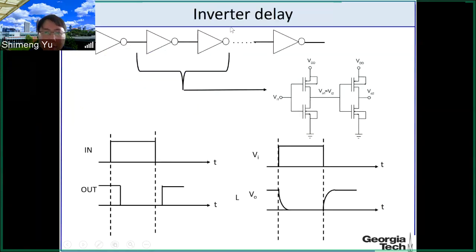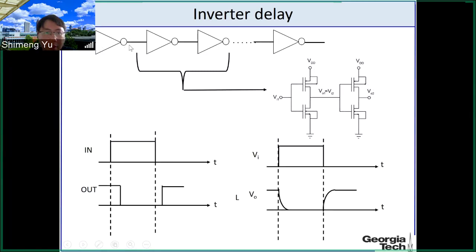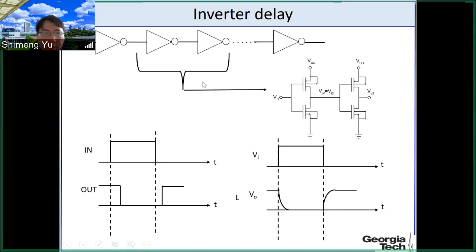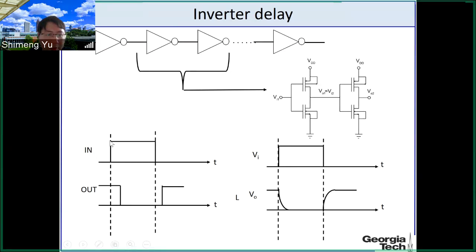If you think of inverters in a chain, that means we have multiple inverters connected together, so one inverter is driving another. If you have signals to propagate, it will take some time and there will be delay for the signals to go through these inverter chains. In a digital circuit, the input will have a low-to-high transition and the output from high to low, but there will be delay.